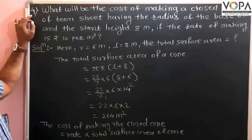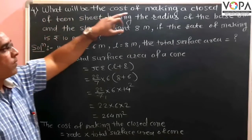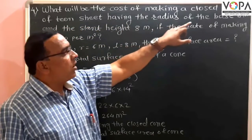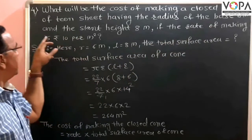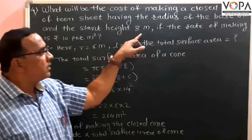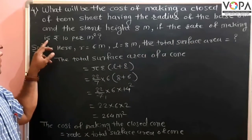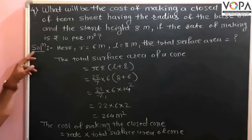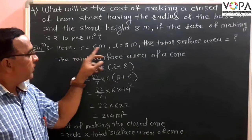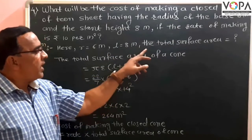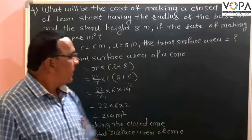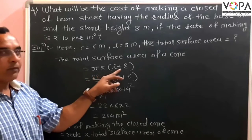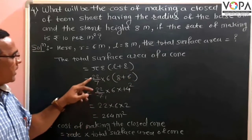Next, problem 4: What will be the cost of making a closed cone of tin sheet, having the radius of the base equal to 6 m and the slant height equal to 8 m, if the rate of making is Rs 10 per meter square? Solution: here R = 6 m and L = 8 m. We need to find the total surface area. The formula for total surface area of a cone is πR(L + R).